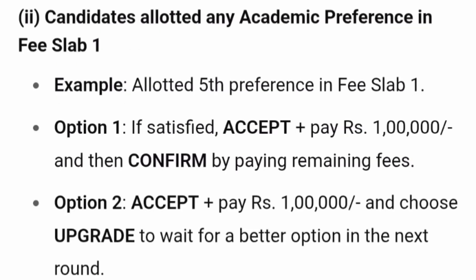Scenario 2: Candidate is allotted any academic preference in slab 1 — meaning they did not get the first preference but got the lowest fee slab. For example, a candidate gets preference number 5 in fee slab 1. They are happy with the fee slab but wanted a higher preference. Option 1: if satisfied, accept and pay 1 lakh rupees and confirm the remaining fees. Option 2: accept and pay 1 lakh rupees, then choose upgrade — meaning they wait for a better academic preference in the next round.